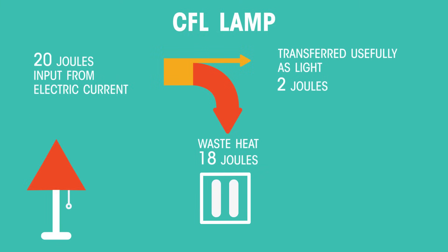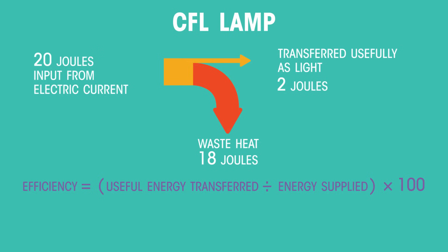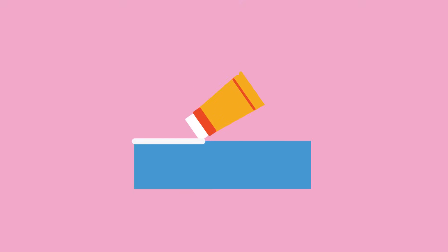Can you calculate the efficiency for this lamp? Efficiency equals useful energy transferred divided by energy supplied, times a hundred. There are ways in which energy transfers can be made more efficient — for example, the use of lubrication can reduce friction and therefore reduce the transfer to heat.